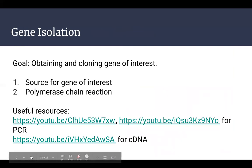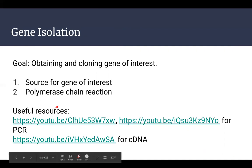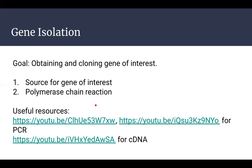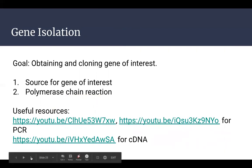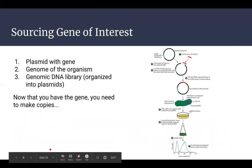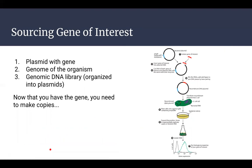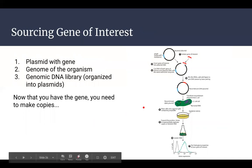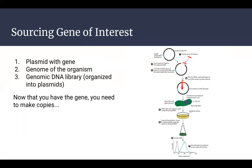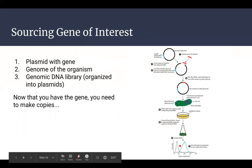Gene isolation: the goal is to obtain the gene you want to clone — your gene of interest. We do this by sourcing the gene of interest and then performing a polymerase chain reaction. You need a plasmid with the gene, the genome of the organism, and the genomic DNA library organized into plasmids.